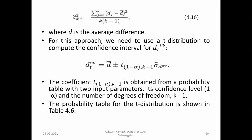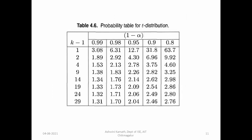This table shows T values for different degrees of freedom (K-1). For example, K=2 gives K-1=1, K=3 gives K-1=2, K=5 gives K-1=4, and K=30 gives K-1=29. The confidence levels shown are 99%, 98%, 95%, 90%, and 80%.